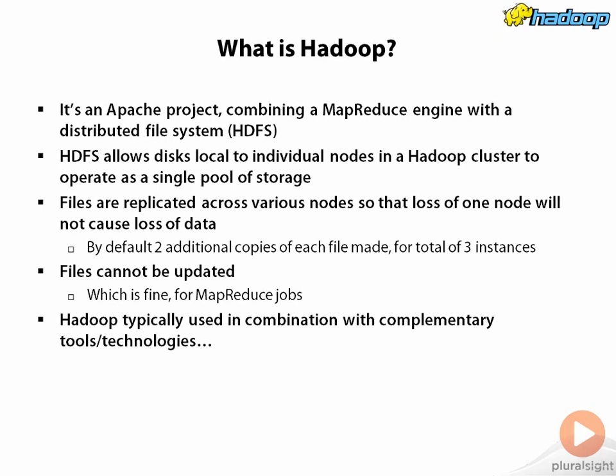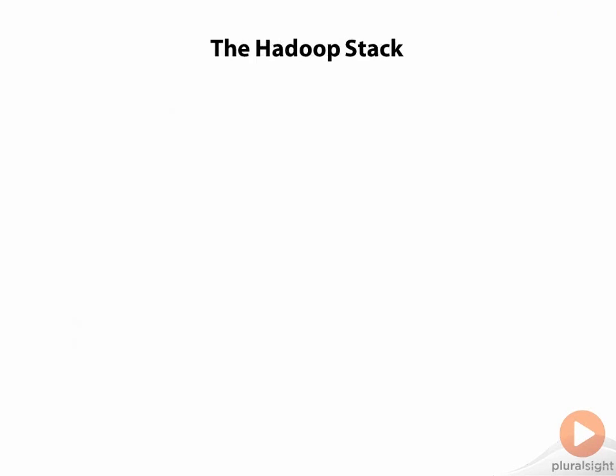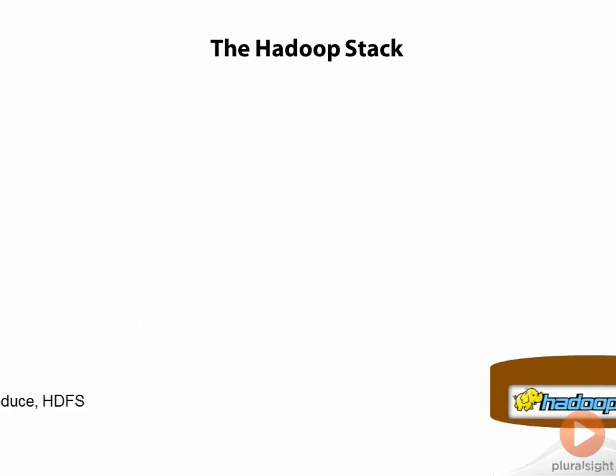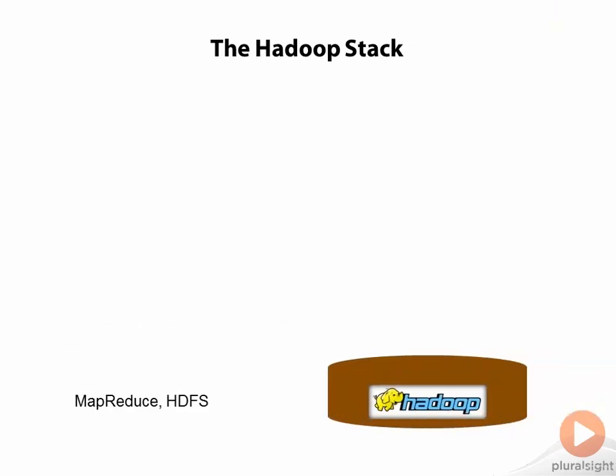Hadoop all by itself can be very useful. MapReduce jobs in Hadoop are programmed natively in Java, so with just the combination of Java and Hadoop you could do a lot. However, Hadoop is typically used in combination with other tools and technologies, and together those make up what you might call the Hadoop stack. Hadoop itself is at the bottom of that stack, providing MapReduce and file services to big data professionals.